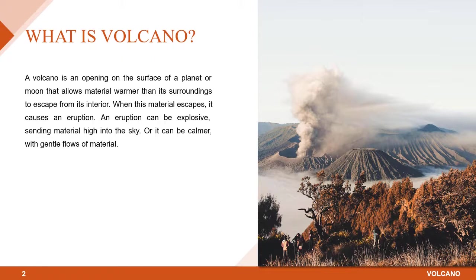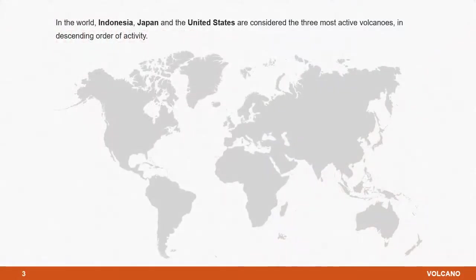An eruption can be explosive, sending material high into the sky, or it can be calmer, with gentle flows of material. In the world, Indonesia, Japan, and the United States are considered the three most active volcanic countries in descending order of activity.